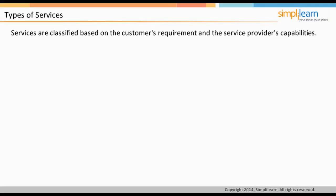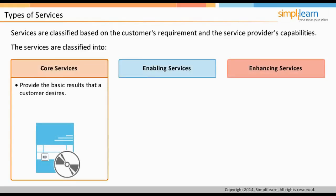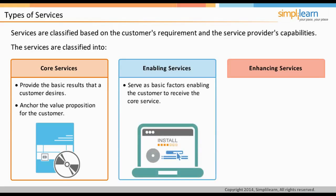Services are classified based on the customer's requirement and the service provider's capabilities. Broadly, the services are classified into core services, enabling services, and enhancing services. Core services provide the basic results that a customer requires — they signify the value that a customer wants and for which they are keen to invest. Core services anchor the value proposition for the customer and provide the basis for their continued utilization and satisfaction. Enabling services are required to deliver a core service; they serve as basic factors enabling the customer to receive the core service. Customers do not perceive an enabling service as a service in its own right, and the service may not be seen by the customers.